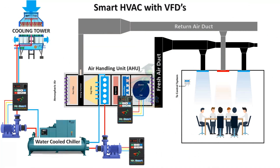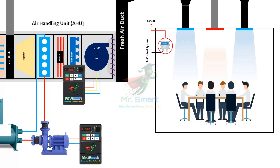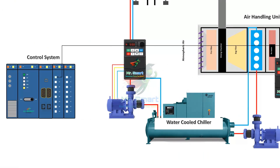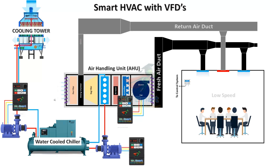First, let's have an overview of how an efficient and smart HVAC system using VFDs works. Sensors are installed inside the room to monitor conditions — they detect temperature, humidity, CO2 levels, and occupancy. The collected data is sent to the HVAC control system, which processes the sensor data in real time. It determines whether adjustments in airflow or cooling are needed, and sends signals to the VFD to modify fan or pump speed accordingly, resulting in a smart, efficient, and comfortable HVAC space.